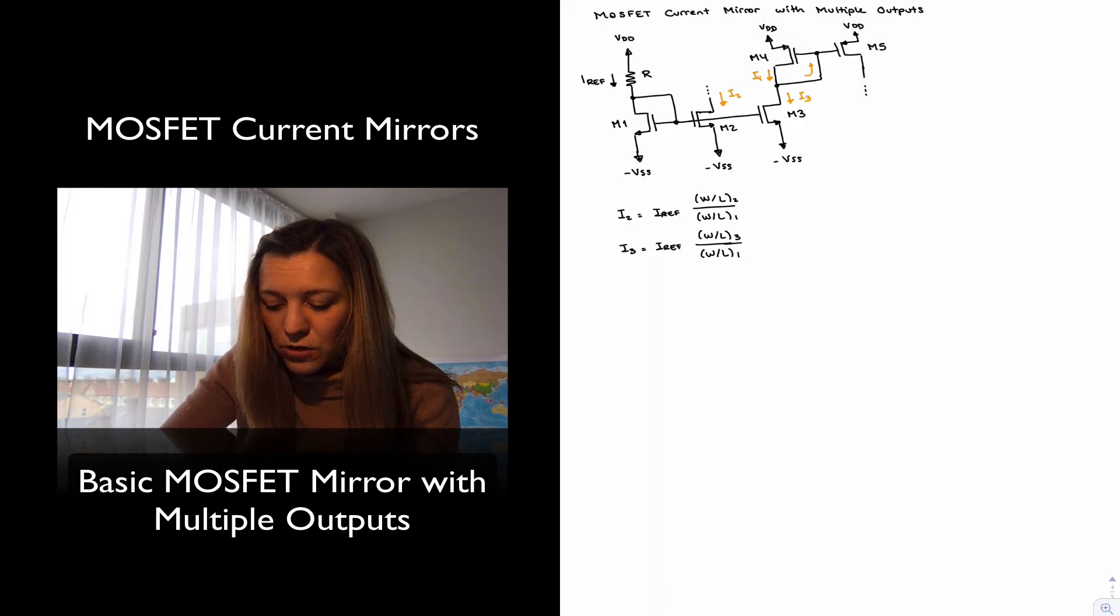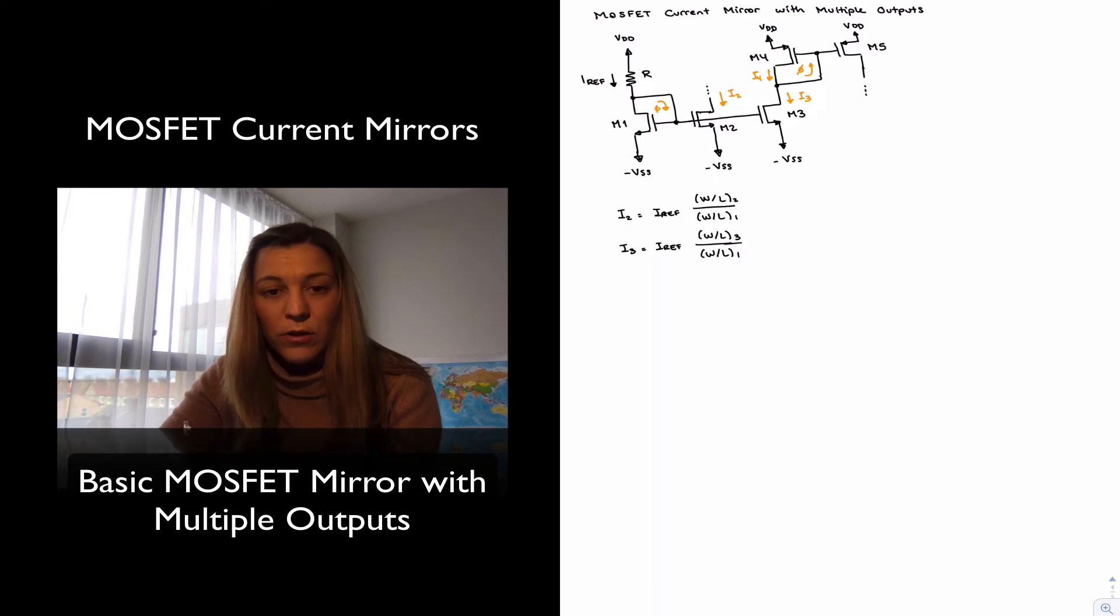Again, notice that the current going to the gates of those transistors is equal to 0, same thing over here, the current going to the gates is equal to 0, that's why I2 is equal to I ref.